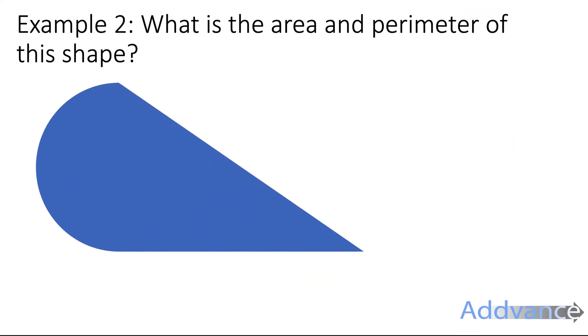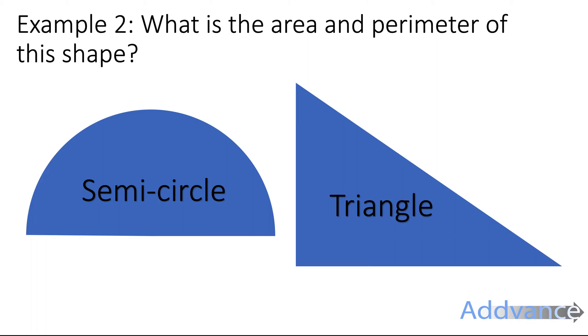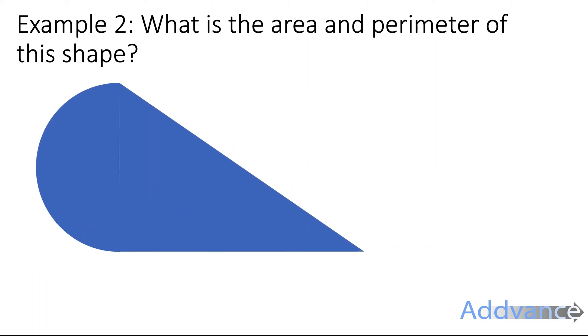Now let's look at a different type of shape. This is a semicircle and a triangle attached together to make a compound shape, and the lengths are 6 centimeters, 10 centimeters, and 8 centimeters.